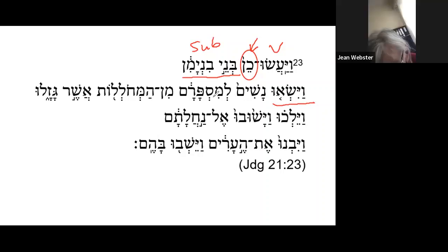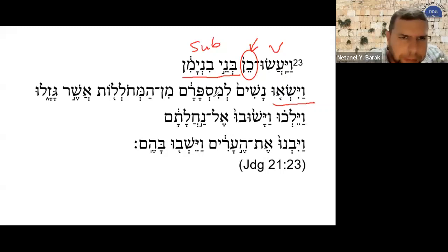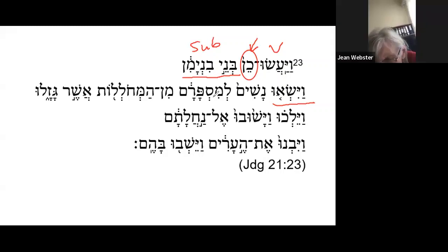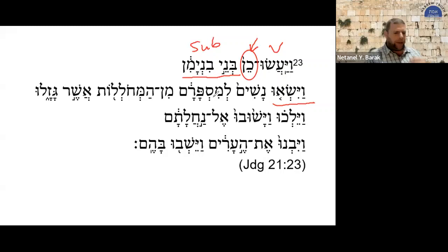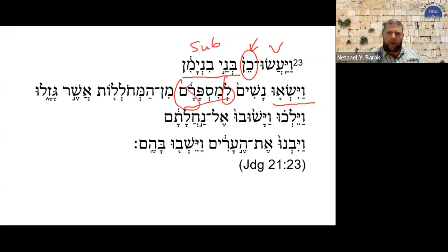You can see people who are married to more than one wife, but it is not the standard. The Bible portrays the standard. Al-ken ya'azov ish et aviv v'et imo v'davak v'ishto v'hayu levasar achad — 'therefore, a man leaves his father and mother and clings to his wife and they become one.' So again, they married women according to their number, lemisparam.